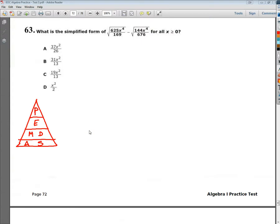Welcome, this is the Algebra 1 end of course practice test number 3, question number 63. The question says, what is the simplified form of the square root of 625x to the 4th over 169 minus the square root of 144x to the 4th over 676 for all x greater than or equal to 0?